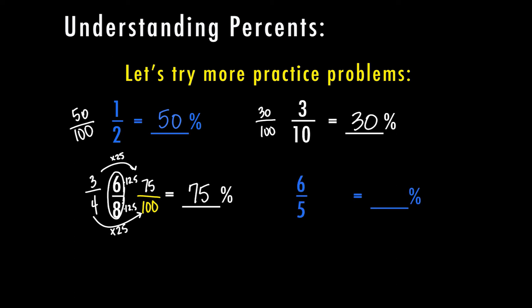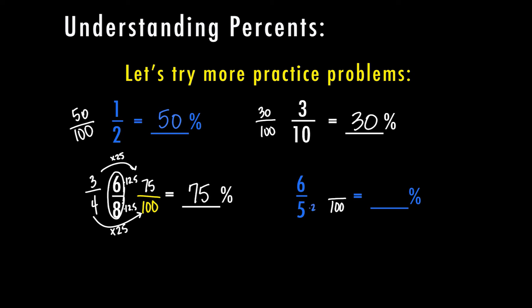For our last one, we have six-fifths. This one's a bit trickier because the numerator is bigger than the denominator, so since the fraction is greater than one, the percent is going to be greater than one hundred. We still change it so the denominator is one hundred: five goes into one hundred twenty times, and six times twenty is one hundred twenty. So this ends up being one hundred twenty percent.